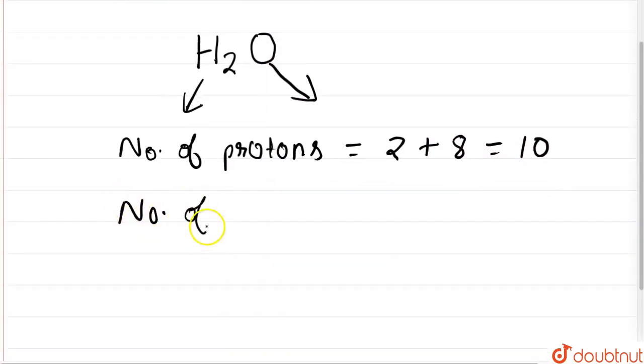Number of electrons - hydrogen has one electron, so two atoms of hydrogen will have two electrons, and oxygen also has eight electrons.